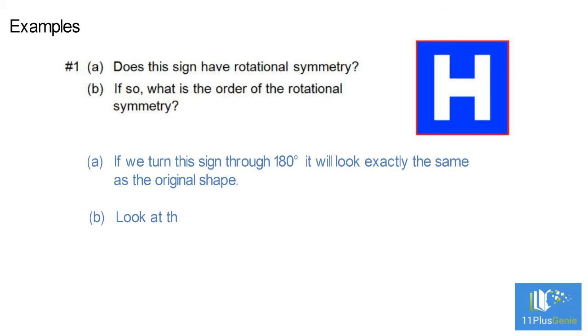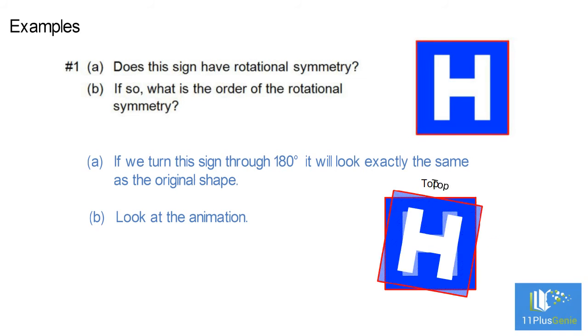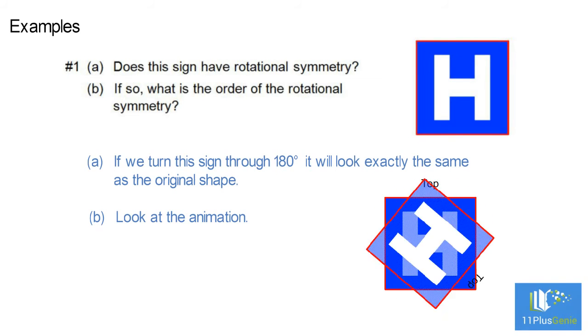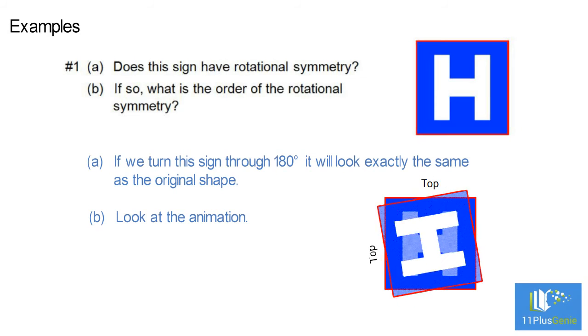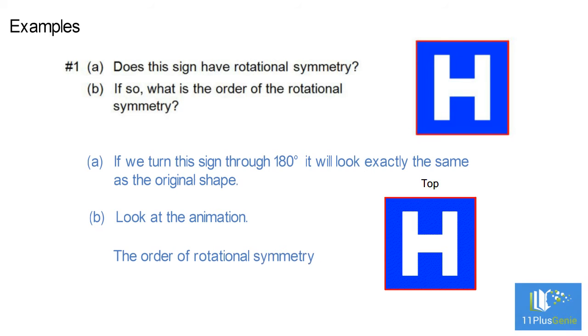Look at the animation. If we turn this sign through 360 degrees it will fall onto itself once, twice. The order of rotational symmetry is 2.